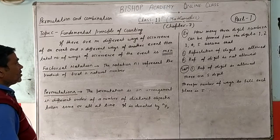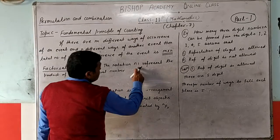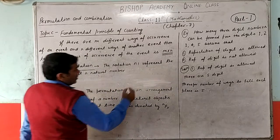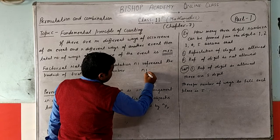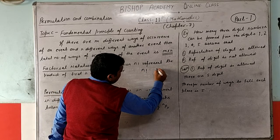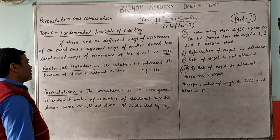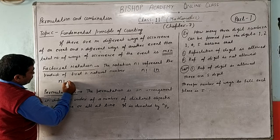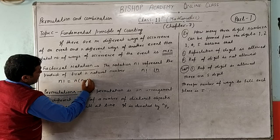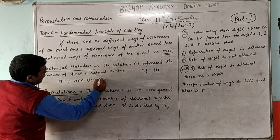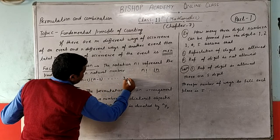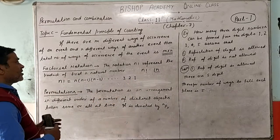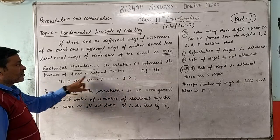Factorial notation: The notation N factorial represents the product of the first N natural numbers.